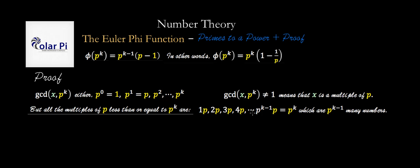Somewhere in the list is also 42 times p to the fifth, and so on, all the way to p to the k minus 1 times p, which is p to the k itself. Those are all the multiples of p less than or equal to p to the k. How many are in this list? There are p to the k minus 1 of them, and we can see that by looking at the multipliers.